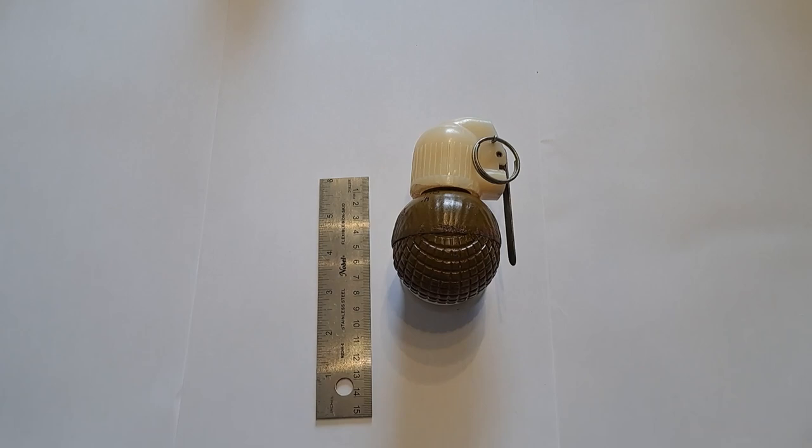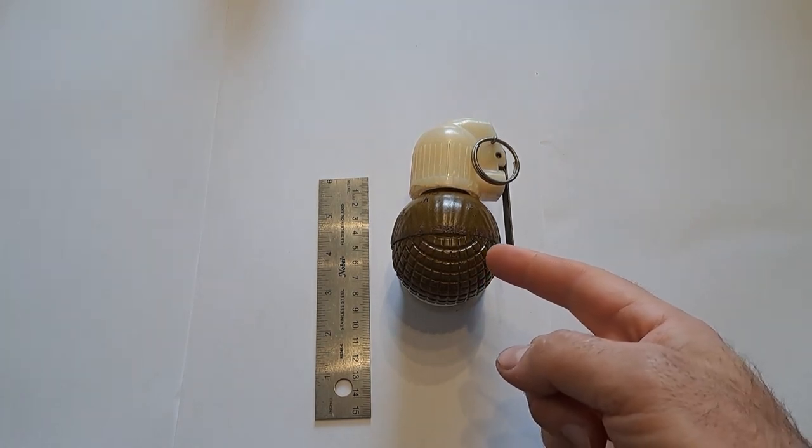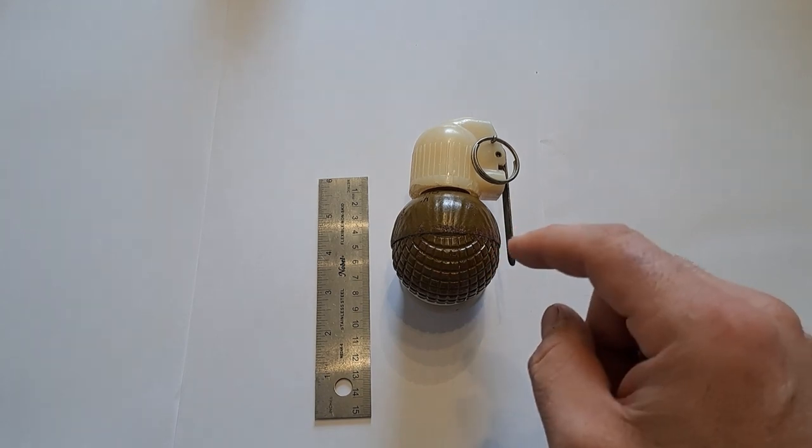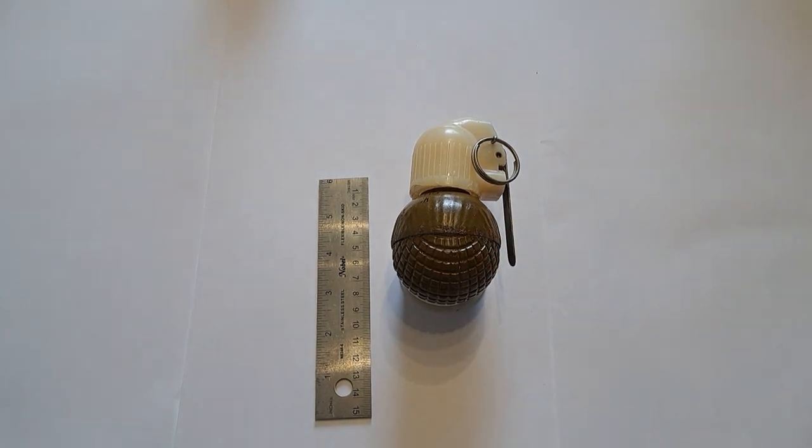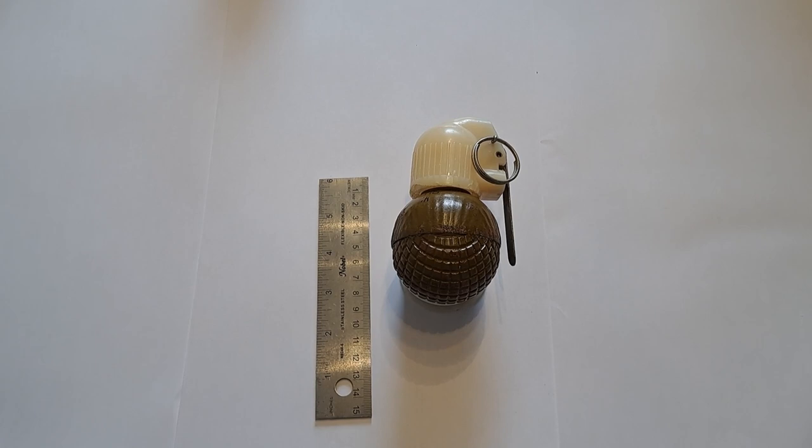All right, so today's video is on the Russian RG-O grenade. There is also a Russian RGN grenade that everything I talk about here should match the same for the other one. The only difference is this is a steel body made of four hemispheres, and the other one is just a single aluminum body.